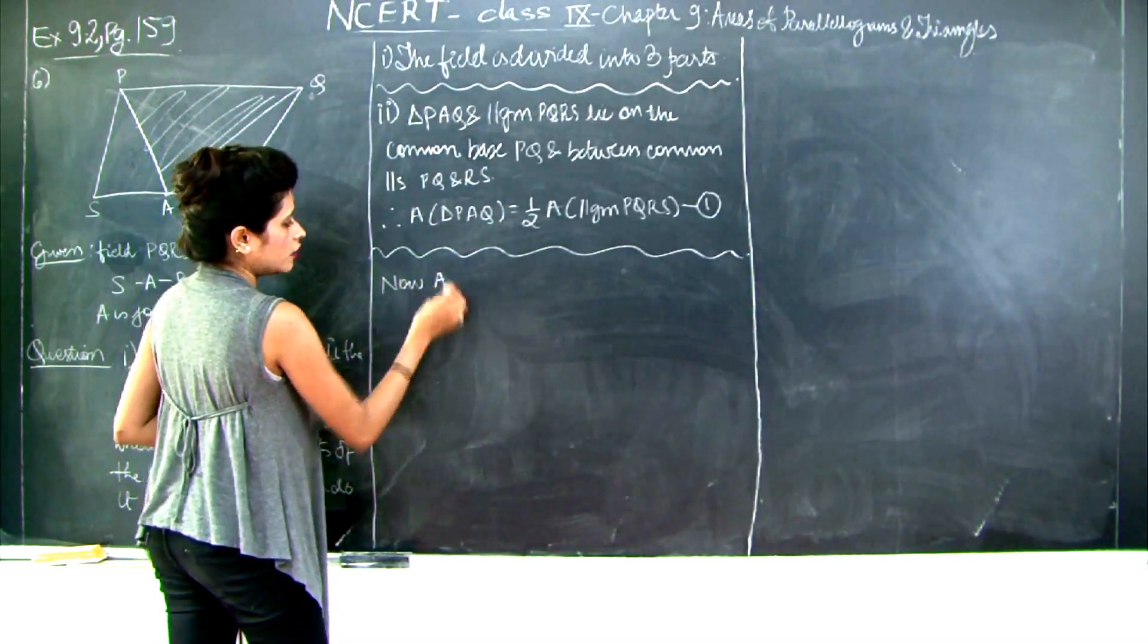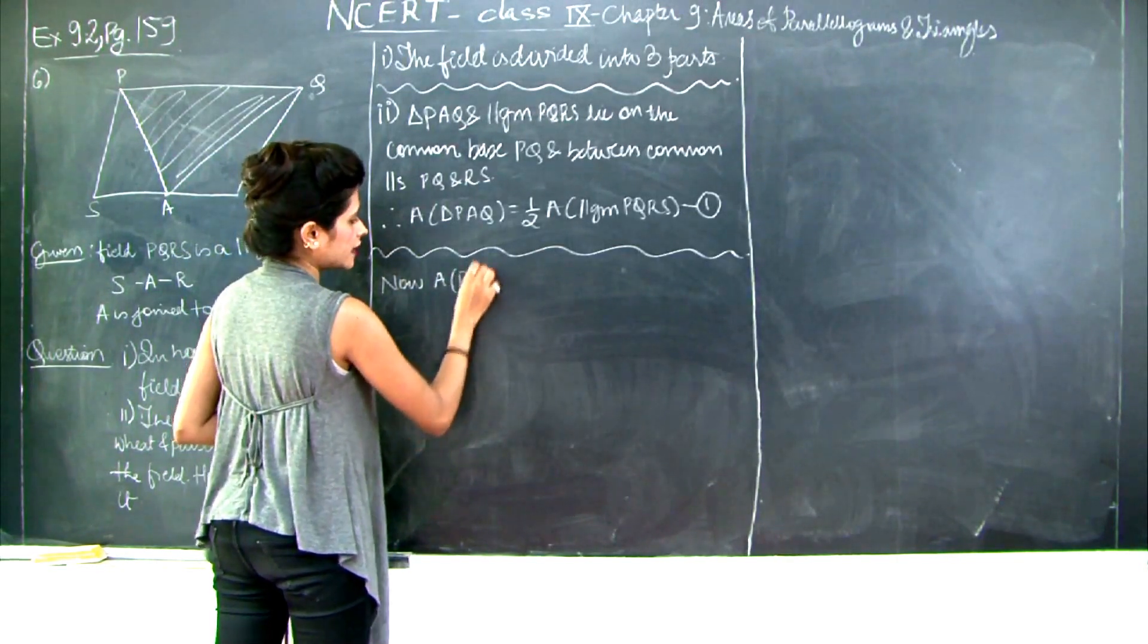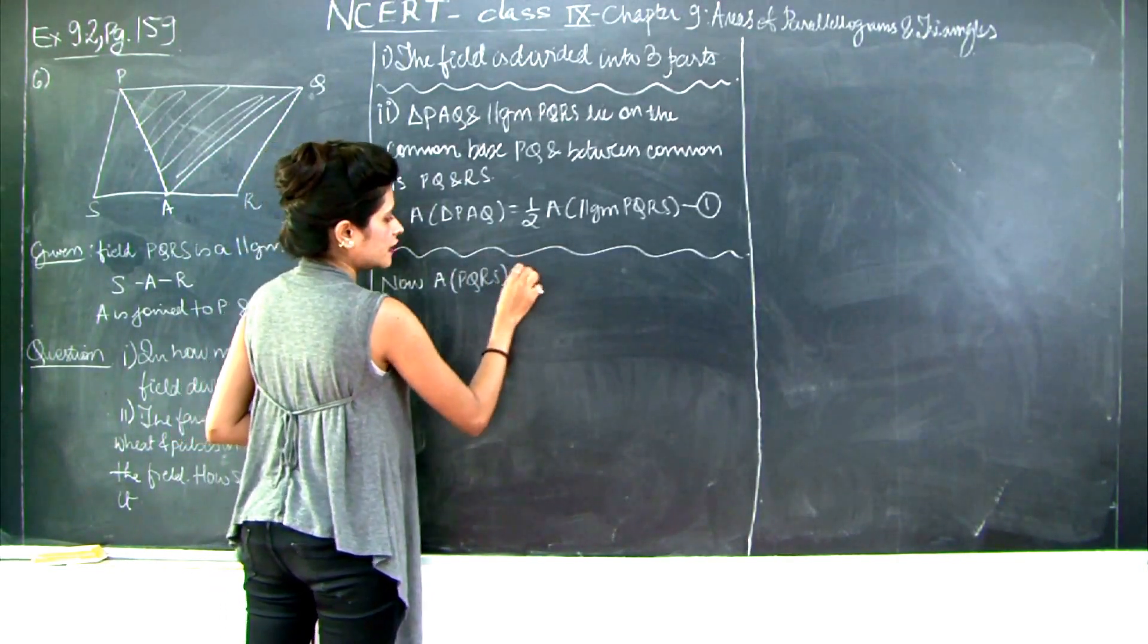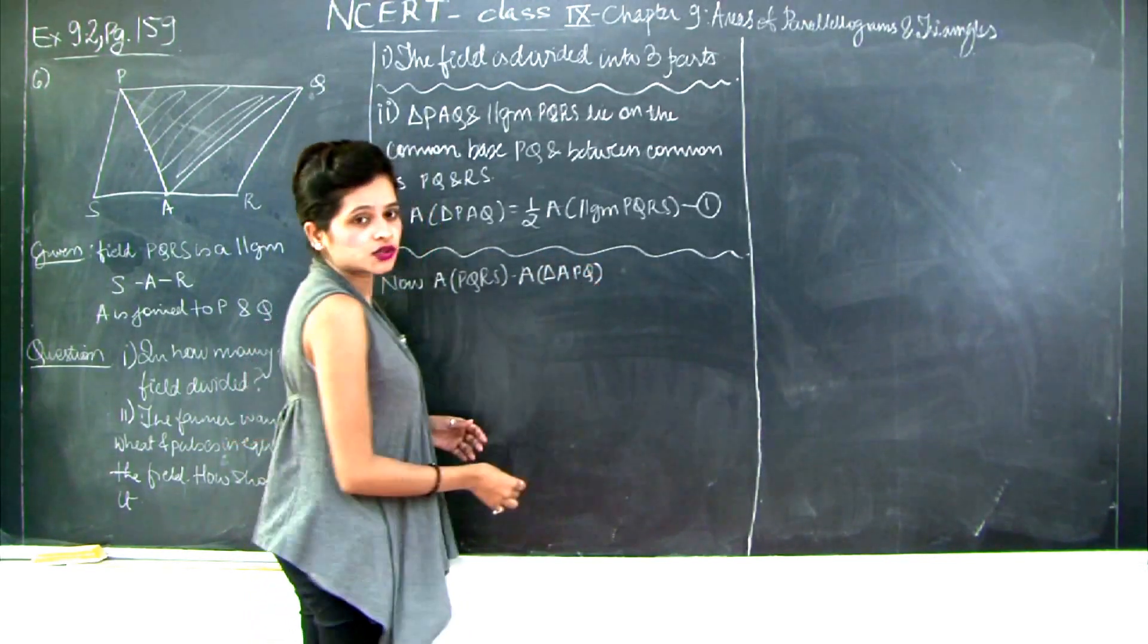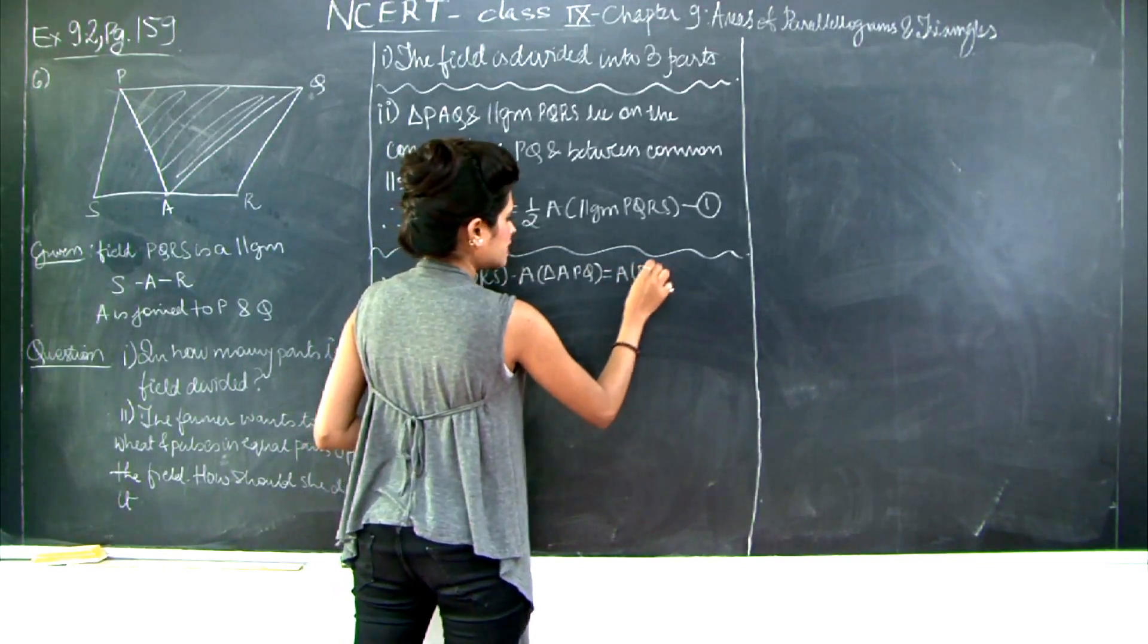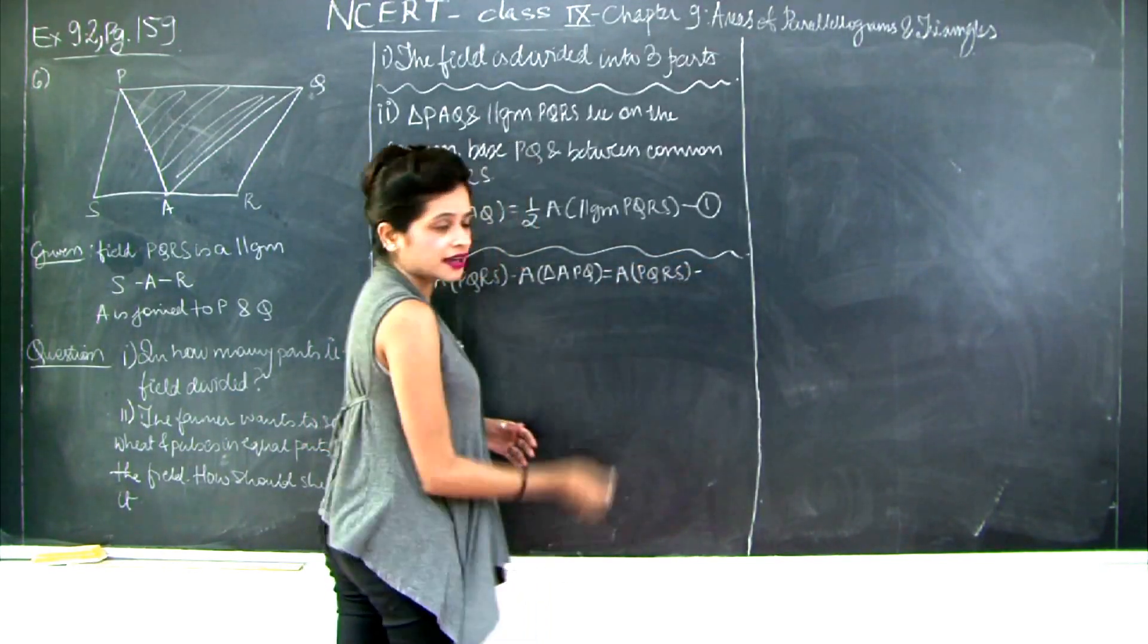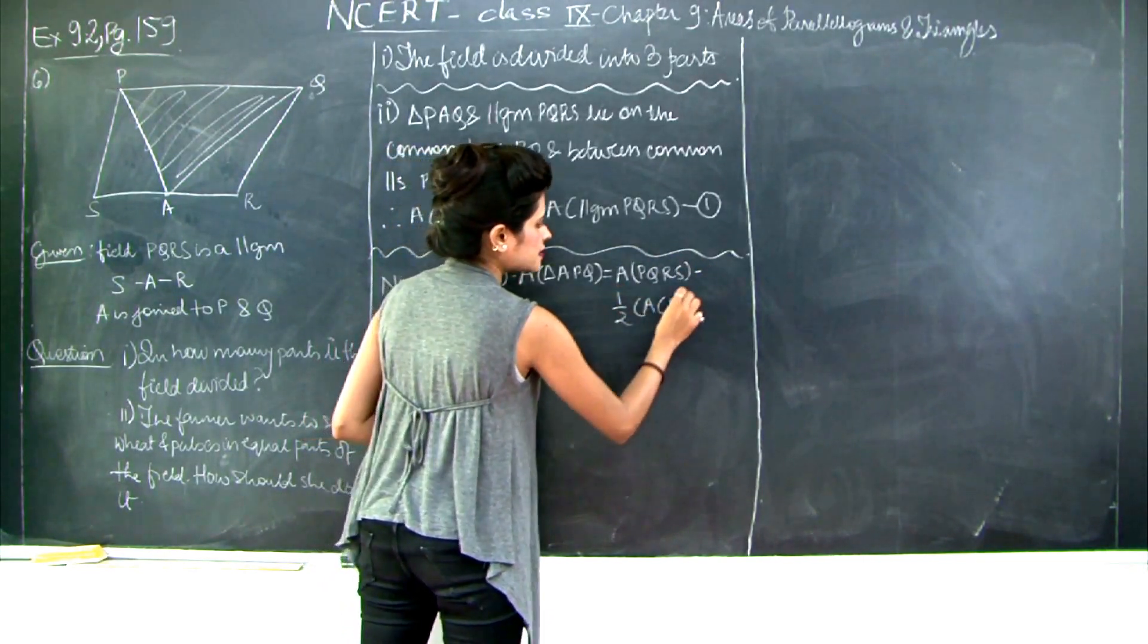Area of parallelogram PQRS minus area of triangle APQ is what? Area of PQRS minus half of area of PQRS, right?